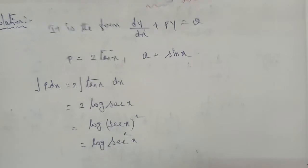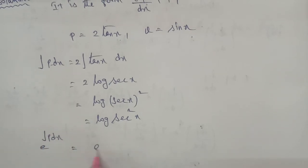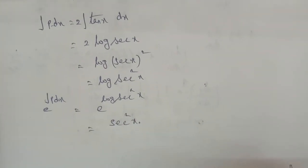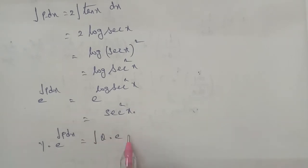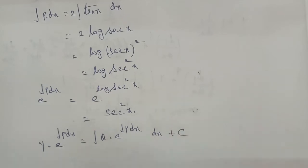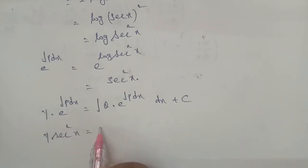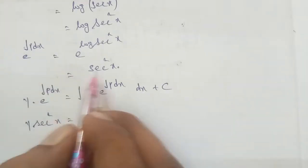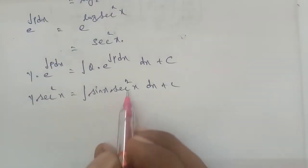Therefore, the integrating factor e to the power of integral P dx is equal to e to the power of 2 log sec x, which equals sec²x. The general solution is y into e power integral P dx equal to integral Q into e power integral P dx dx plus c. Substituting, Q is sin x and e power integral P dx is sec²x, so y·sec²x equals integral sin x · sec²x dx plus c.